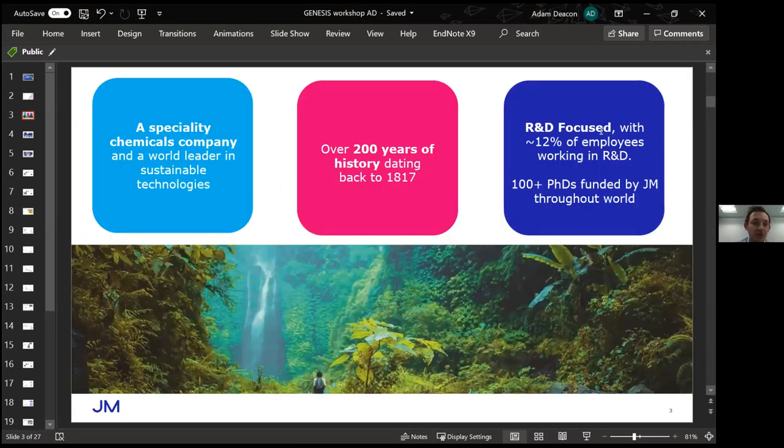Johnson Matthey is a specialty chemicals company focusing on sustainable technologies. Currently our biggest business is clean air, focusing on catalytic converters in automotive vehicles to reduce toxic emissions. We're investing heavily in other areas such as batteries, blue and green hydrogen, and fuel cells among other technologies.